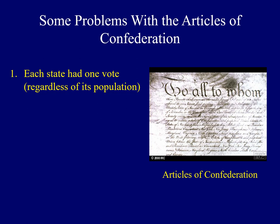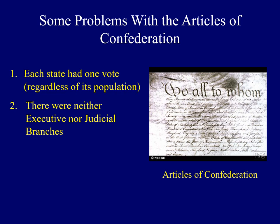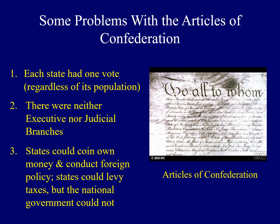There were some apparent additional problems with the Articles. Secondly, there was neither an executive nor a judicial branch. Essentially, there was only one branch of government — the legislative branch — and there was a national congress. Finally, states had a tremendous amount of power, as mentioned earlier. Some of the powers that they had were to coin their own money and even conduct their own foreign policy.